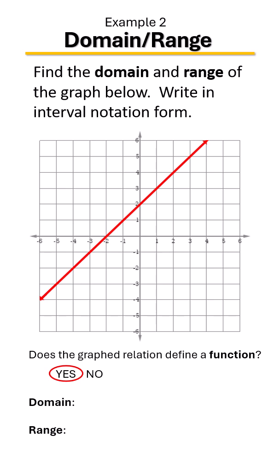Now let's find the domain. We want to know how far does it extend to the left and to the right. The key here is that you have these arrows at both ends. Because you have arrows on both ends, that means it never stops — it's going to go on and on and on. So we have to use parentheses and not brackets. You use brackets when it starts and stops at a point; if it goes on forever, we use parentheses.